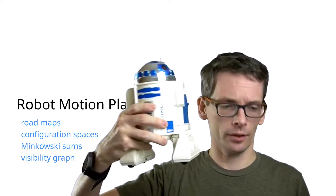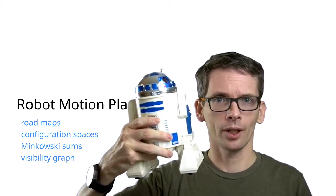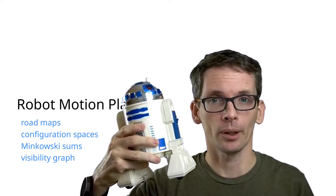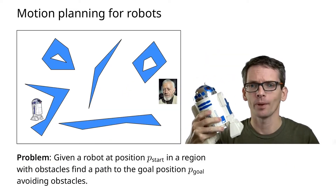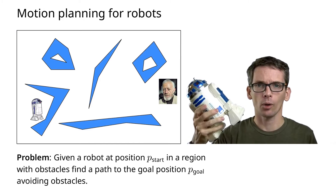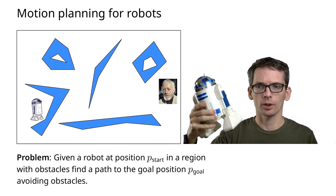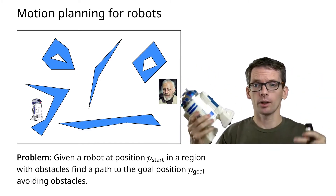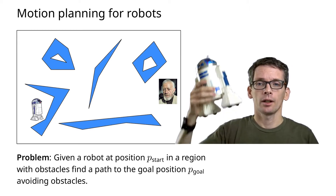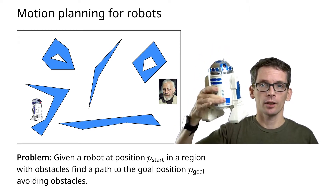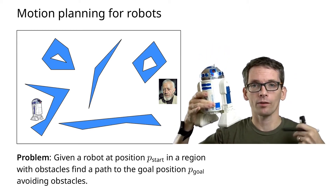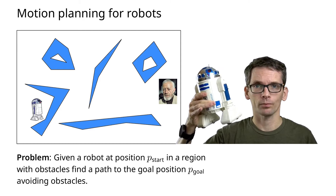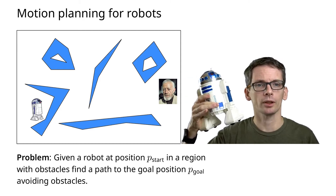We have a robot which wants to go somewhere — that is our problem. Given a robot with some start position and a region with obstacles, this robot wants to find a path to the goal position, avoiding the obstacles.